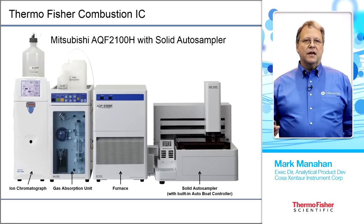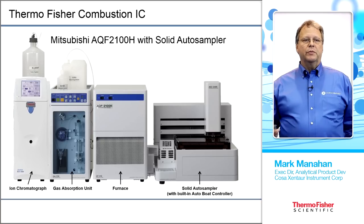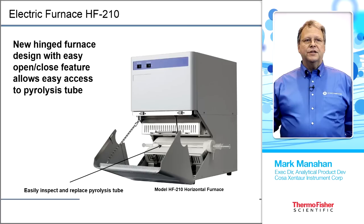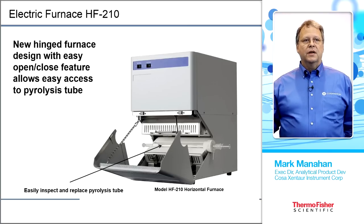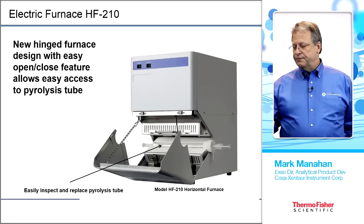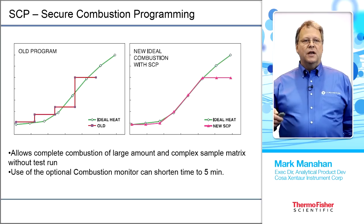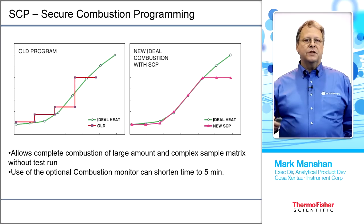The beauty of both systems is that after the initial burn, each subsequent run is just the chromatogram time — about 12 minutes — while the first run combines combustion time of 8 to 12 minutes plus the IC run. Ease of access is a key component: to inspect or replace the pyrolysis tube, the hinged furnace opens easily without needing the system to fully cool down. The new AQF-2100 has more boat position steps and slower movement rates to ensure complete combustion, allowing optimization for specific sample needs.